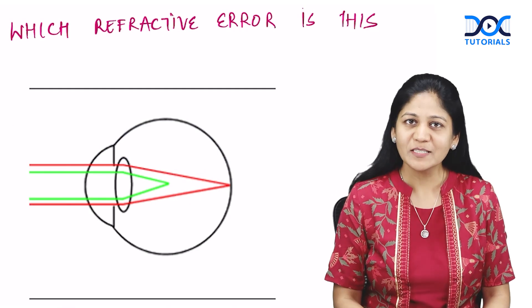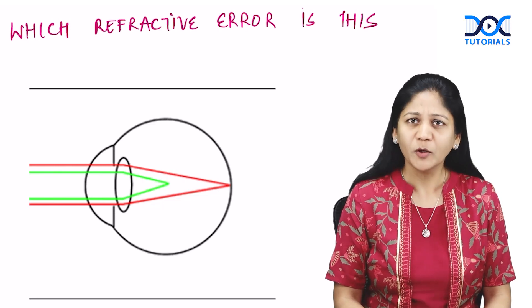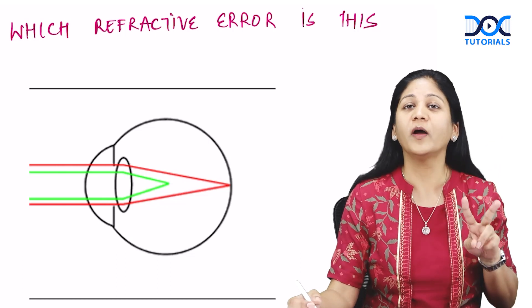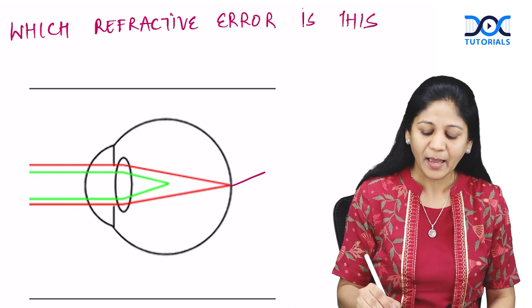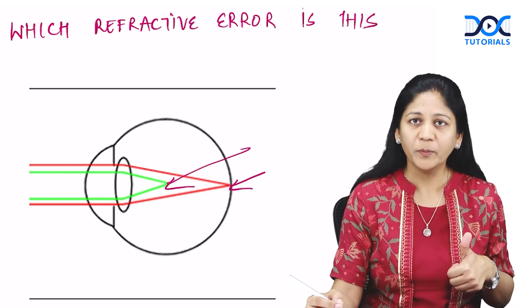If you see this picture, my question is which refractive error is this? Is it myopia? If you look carefully, you'll find two points of focus - one at the retina and one in front of the retina. So is this myopia? No.